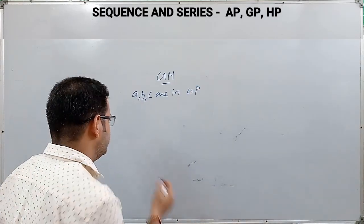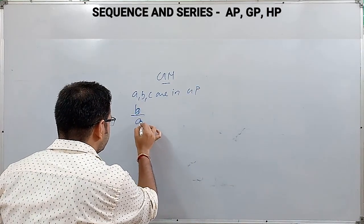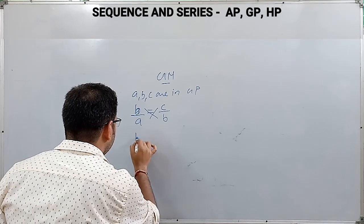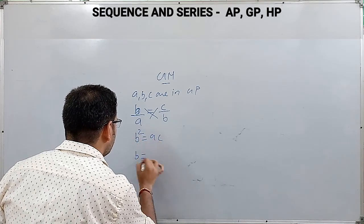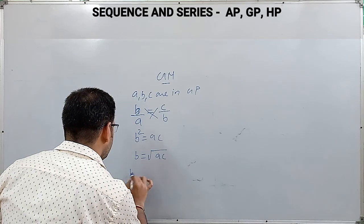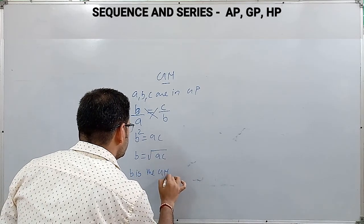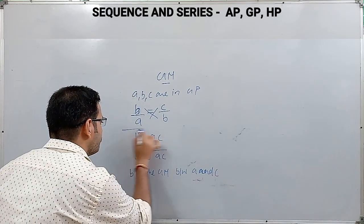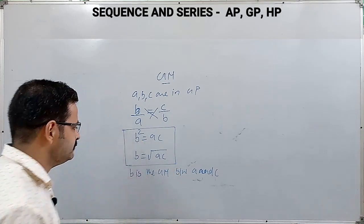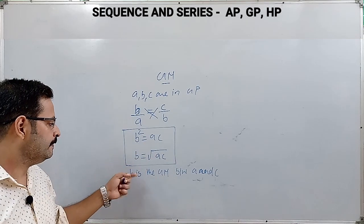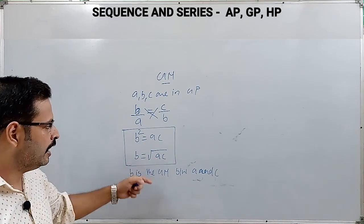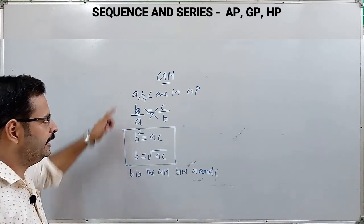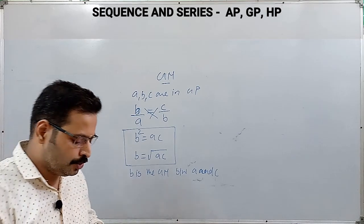Geometric mean (GM): if a, b, c are in GP, then from the definition b/a = c/b. Cross multiplying, we get b² = ac, or b = √(ac). Here b is called the geometric mean between a and c. Both formulas b² = ac and b = √(ac) are useful depending on the information given.